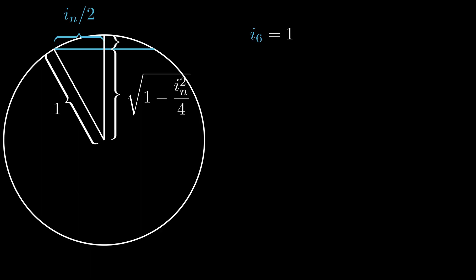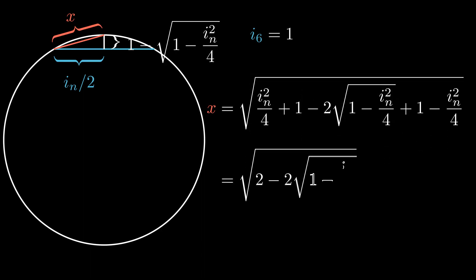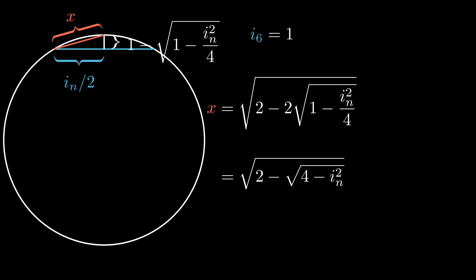This length together with the apothem forms a radius, so its length is 1 minus the length of the apothem. Using the Pythagorean theorem, we can calculate this length, and by simplifying it, we find this length to be the square root of 2 minus the square root of 4 minus i_n squared.